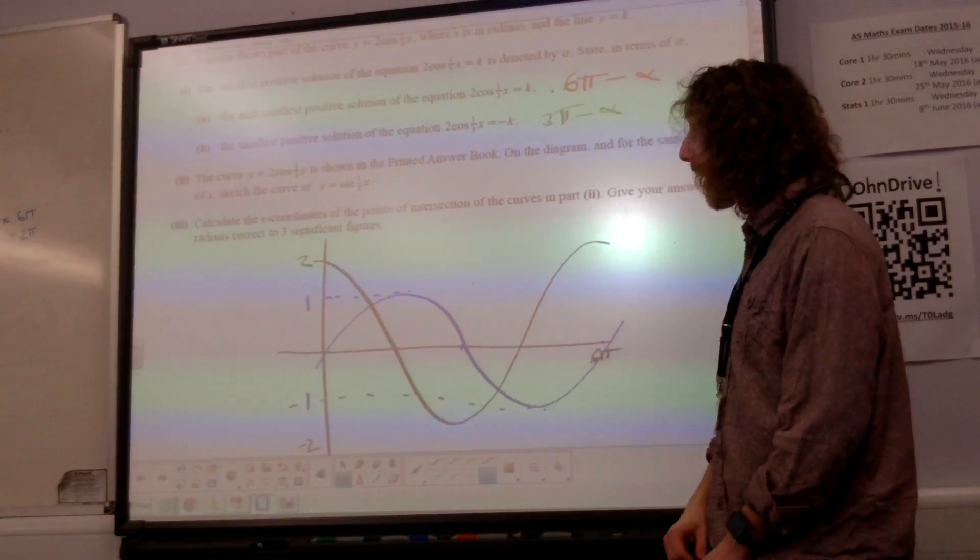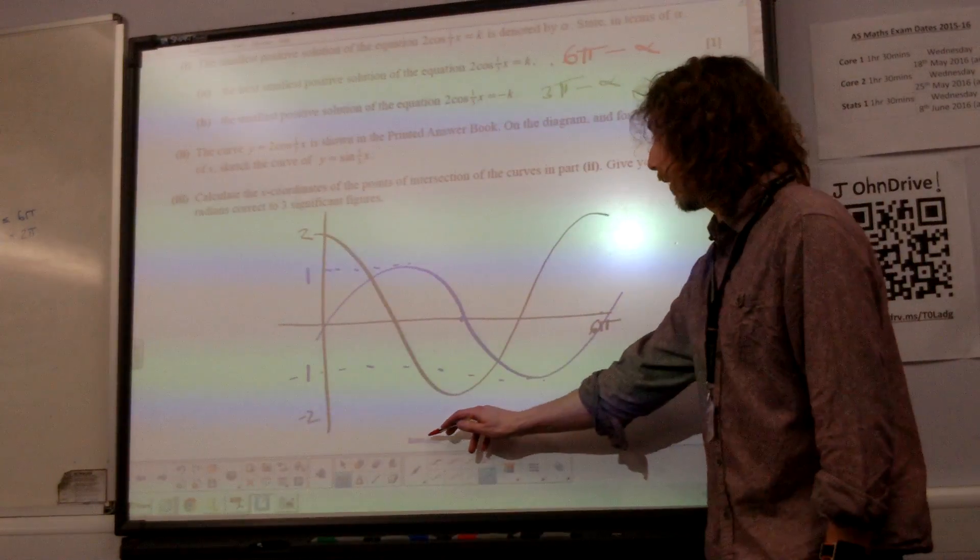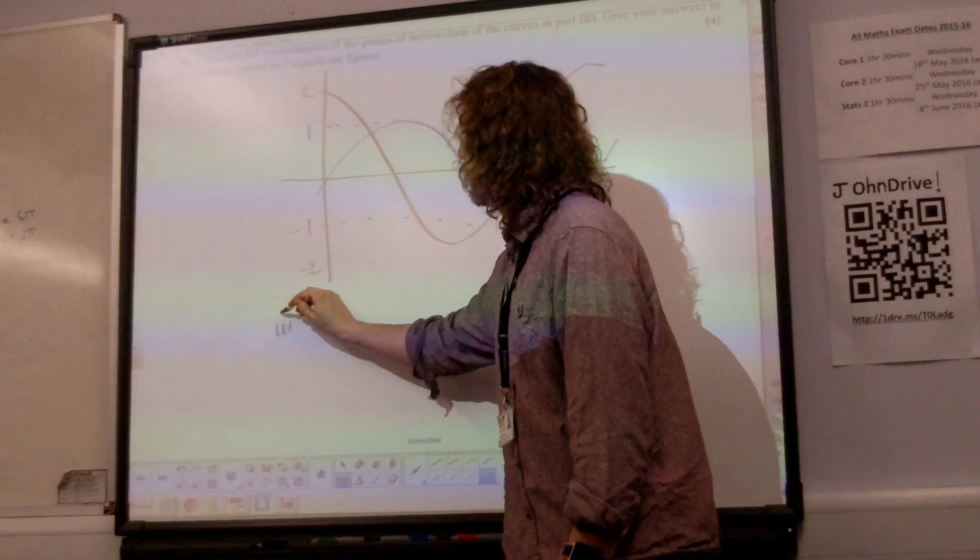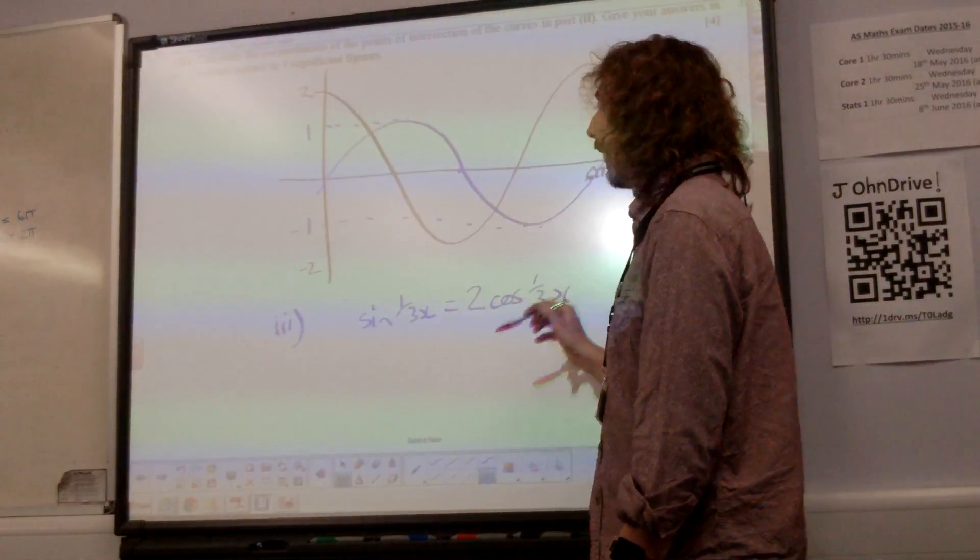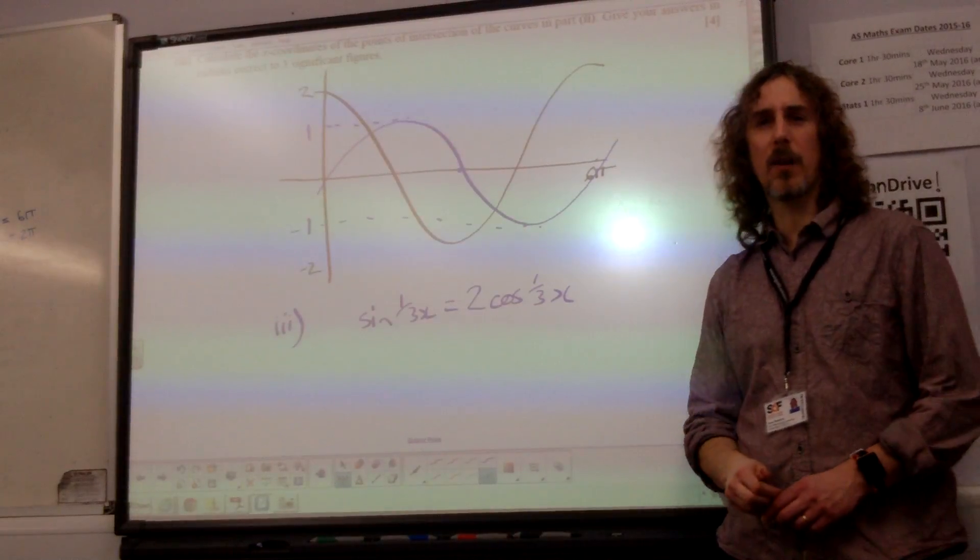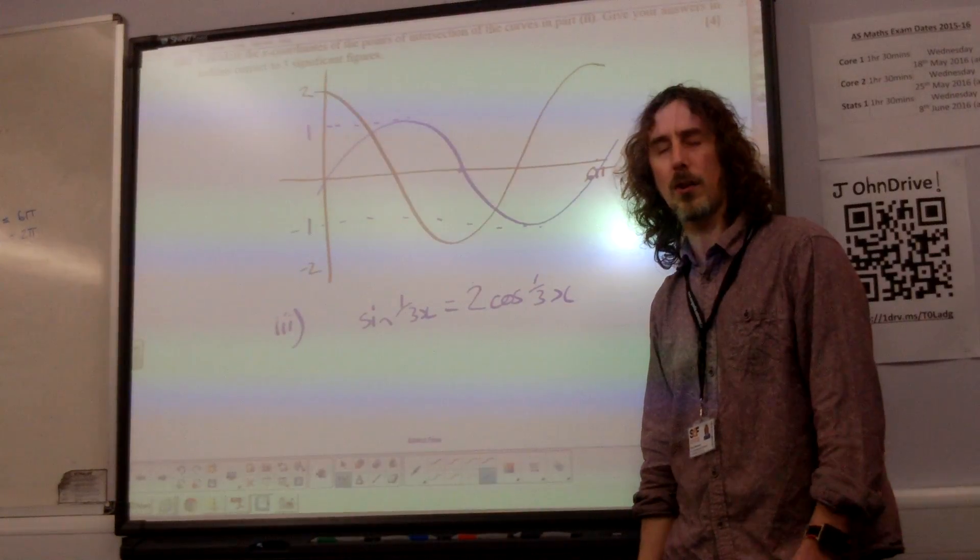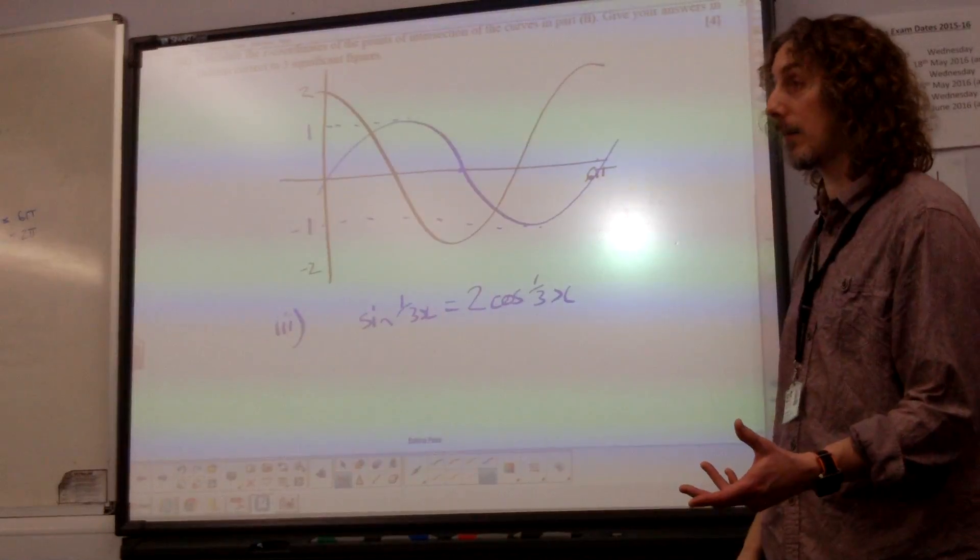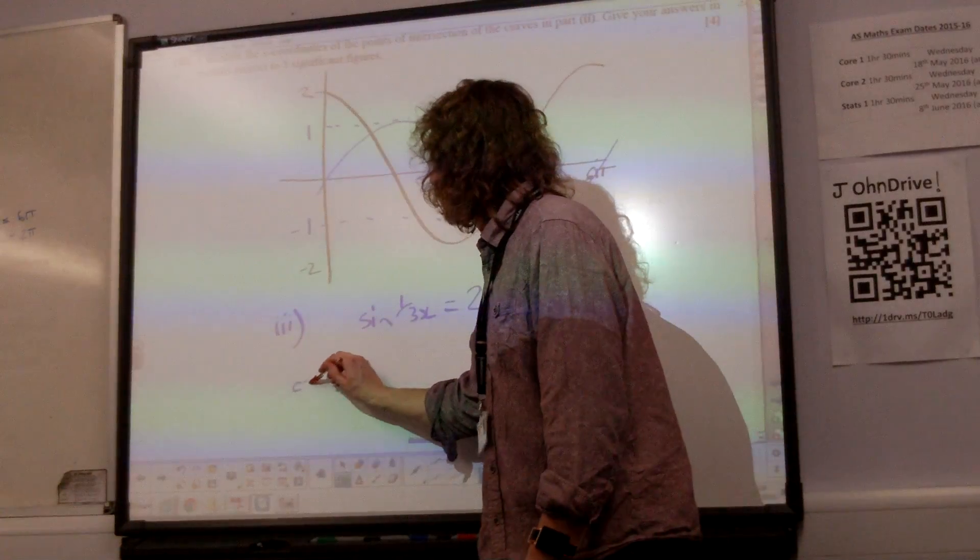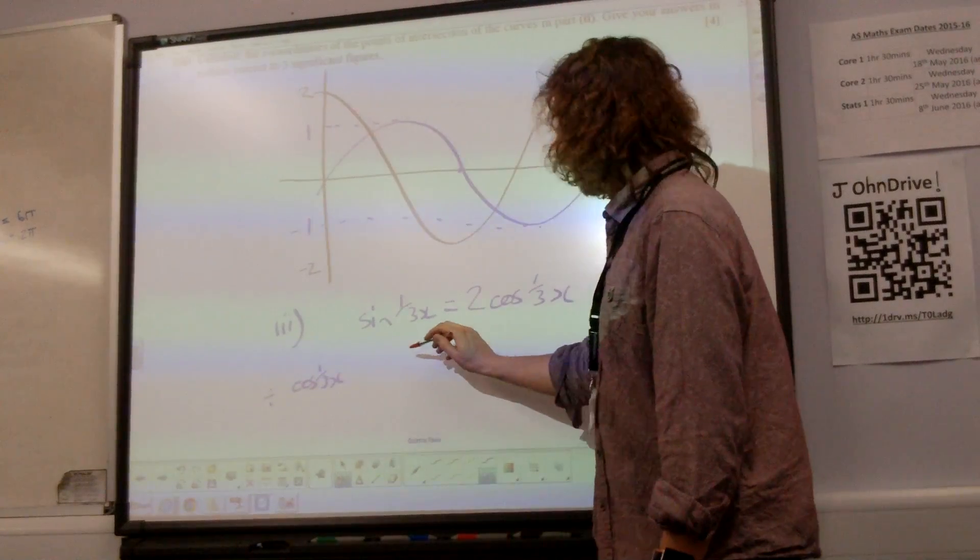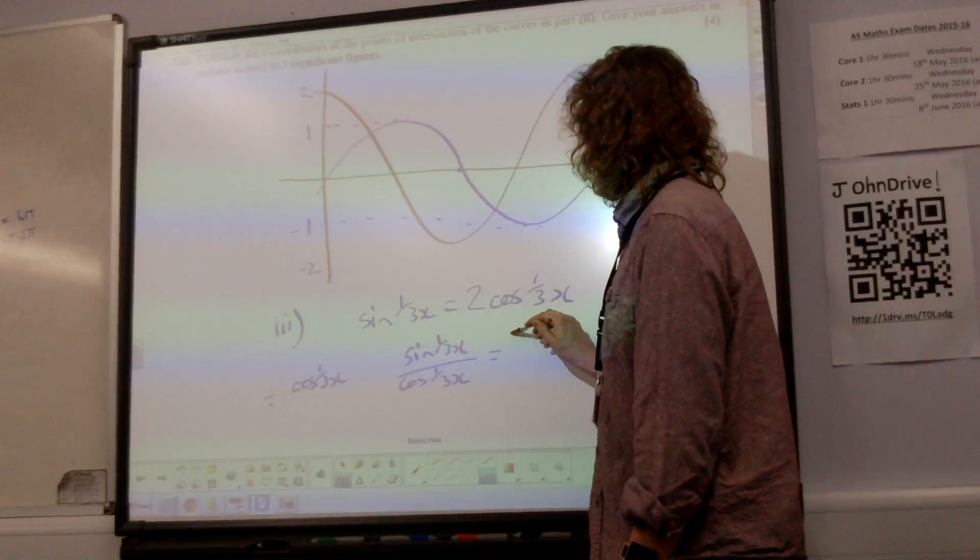Finally, for the last four marks of the paper, find the x-coordinate of the point of intersection. That is, when does sine of third x equal 2 cos of third x? And we've done loads of questions where you have just sine and cos with no other number hanging around, because you know that to solve that, you have to get it in terms of tan. You have to divide by cos of third x. Now, we divide by cos of third x here. And you end up with sine of third x over cos of third x, and you're left with 2 on that side.